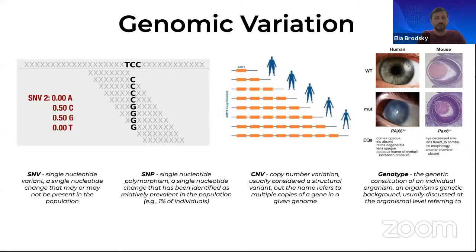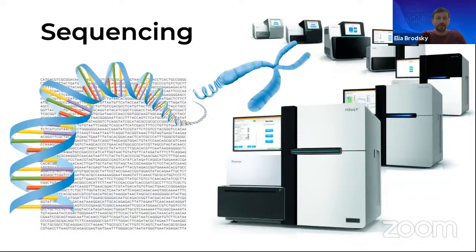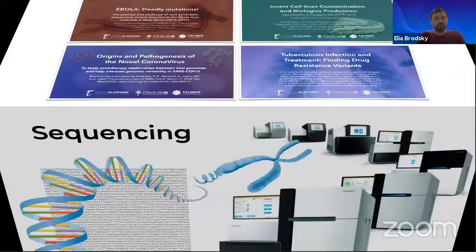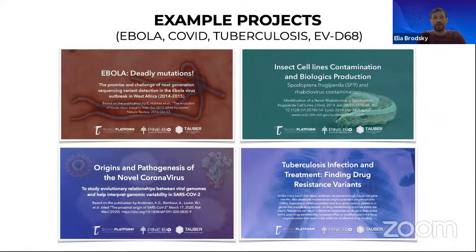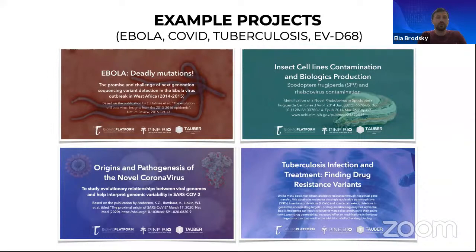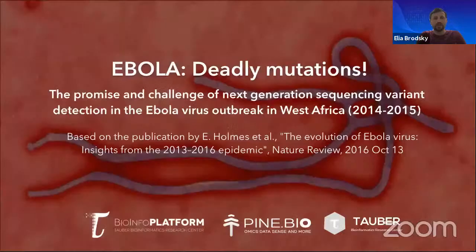We'll discuss the process of DNA sequencing and the different types of DNA sequences available online. We'll see how analysis of whole genome and exome sequencing can be used to find variants and study the association between genotype and phenotype. We'll also introduce self-guided exemplar projects on different types of infections important to genomic data, including Ebola virus, the 2014–2016 outbreak, specific genomic genomes in cell lines used for biologics, origins and pathogenesis of the novel coronavirus, and genome-wide association studies for tuberculosis infection and drug resistance.